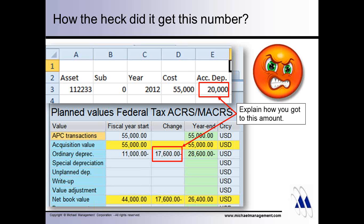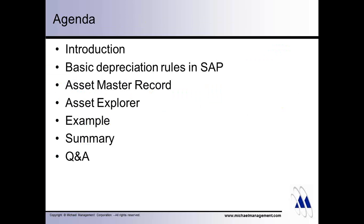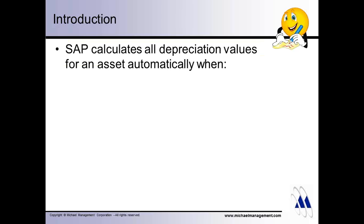And that's always the first assumption, right? SAP is wrong. I don't know what it's doing, but it's doing something wrong. Well, let's talk about depreciation in general — a couple of ground rules when it comes to depreciation calculation in SAP. First of all, SAP does the depreciation calculation automatically for every asset, and it does it at various points in time or events.